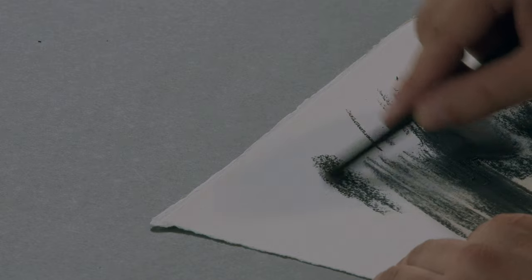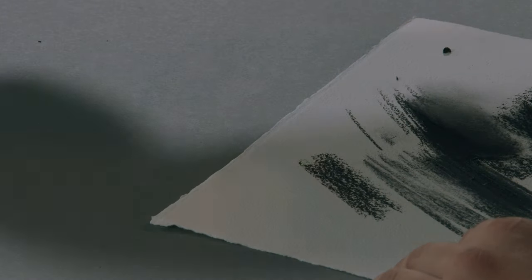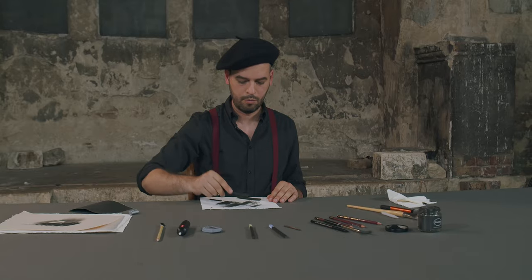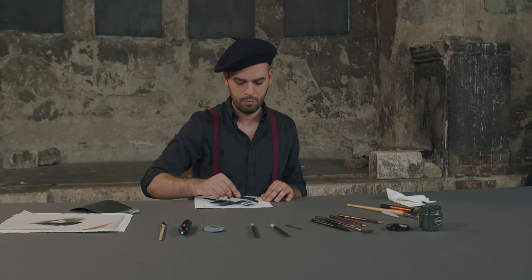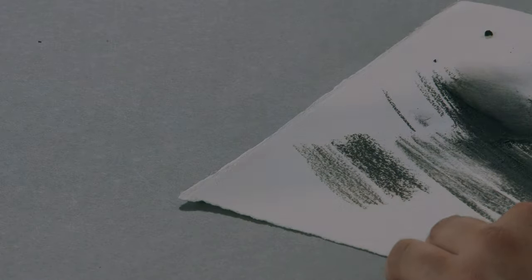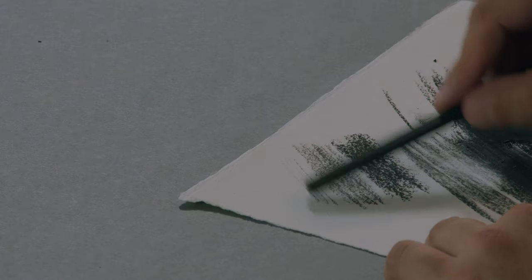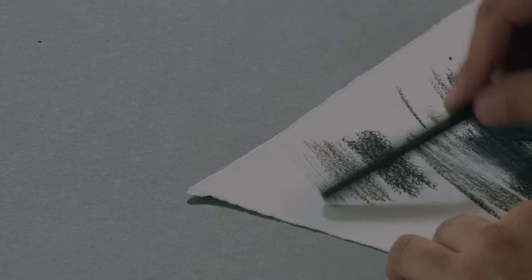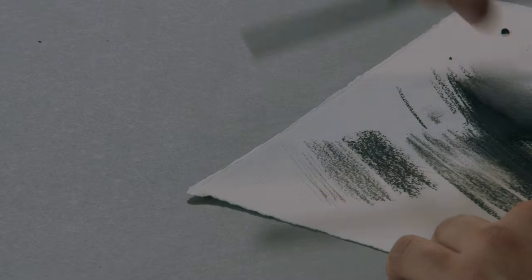The Nitram B is a soft charcoal that produces a rich black. The Nitram HB is a medium charcoal used for homogenizing tones. The Nitram H is the hardest. It can be sharpened to a fine point for detail and light shades.